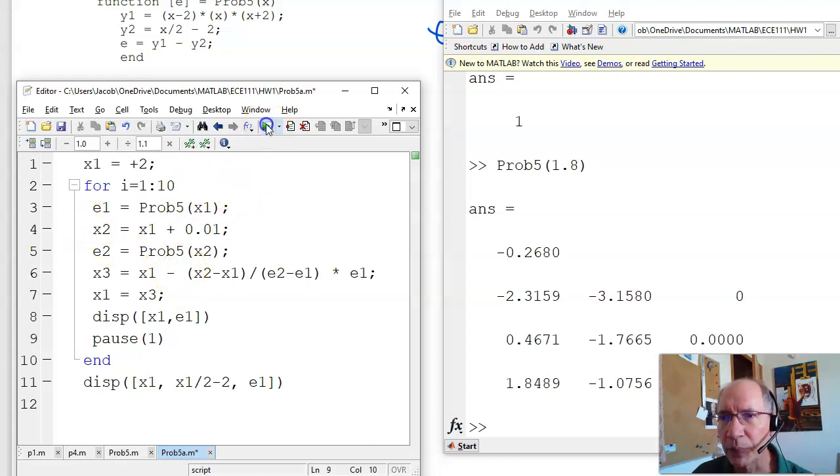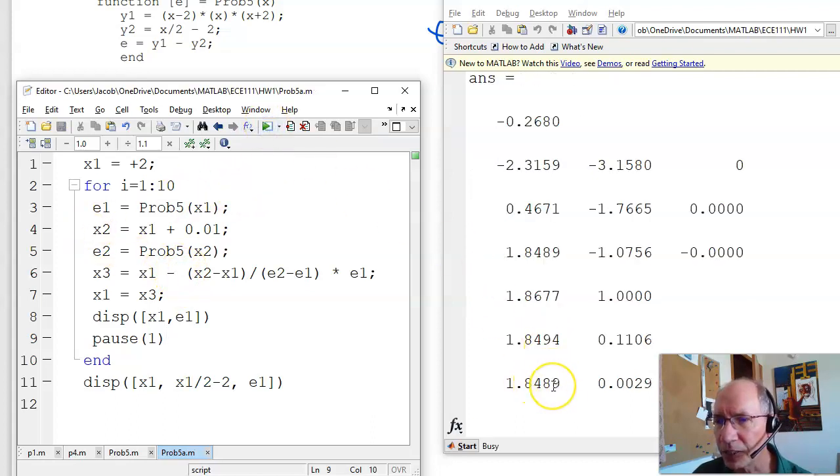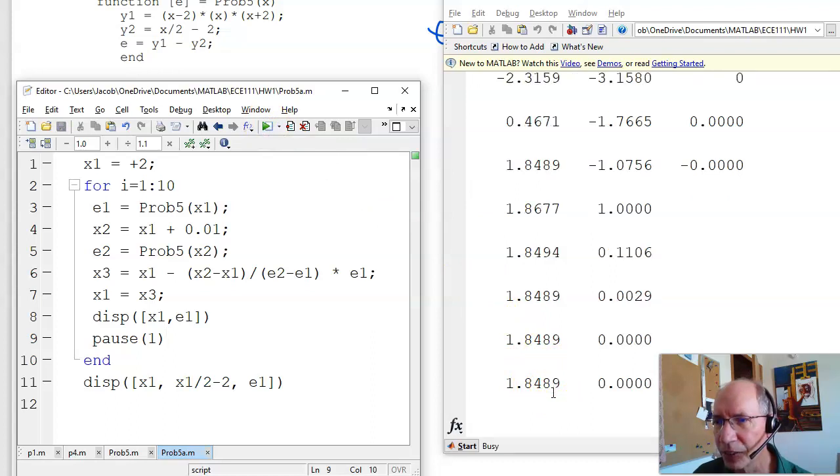So now when I run it, you can sit there and see there's the first guess, second guess, third guess. Found the answer is 1.8489. And there's the error.